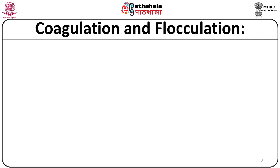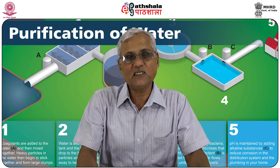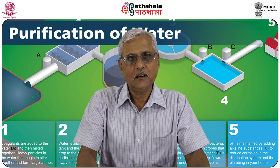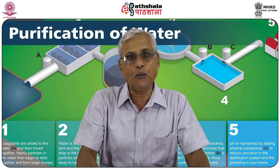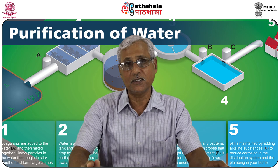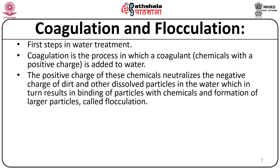Coagulation is the primary and first step in any large-scale water treatment process. It is the process in which coagulant chemicals with a positive charge are added to water. The positive charge of these chemicals neutralizes the negative charge of dirt and other dissolved particles in the water, resulting in the binding of particles with chemicals and the formation of larger particles — a process known as flocculation.